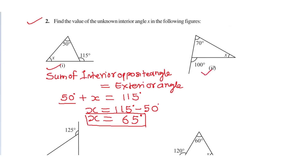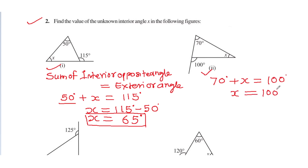Now in the second figure, do it the same way — the sum of the two interior opposite angles equals the exterior angle. So 70 degrees plus x is equal to 100. To find x, transfer 70 to the right-hand side as minus: 100 degrees minus 70 degrees. So x is 30 degrees.